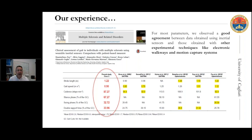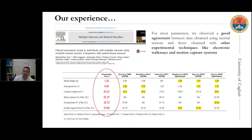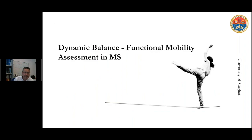It is also important to highlight that we performed a comparison between results obtained with the inertial sensor and results obtained with independent techniques — namely electronic walkways like the GAITRite, very commonly used in neurological gait assessment, and also with optoelectronic systems, meaning classical three-dimensional gait analysis with motion capture. Most of the parameters measured with the inertial sensor were in very good agreement with those measured with the other independent techniques.